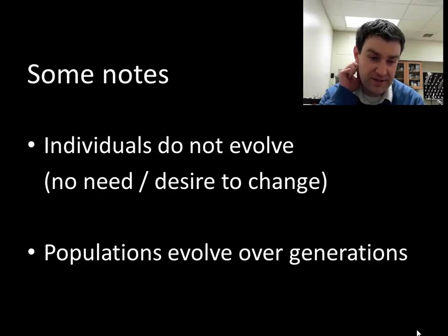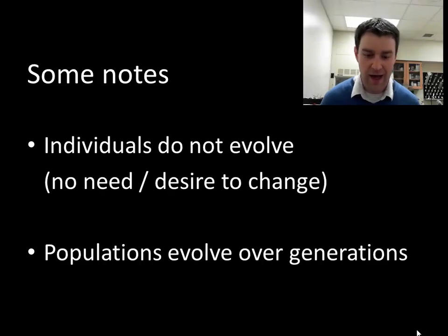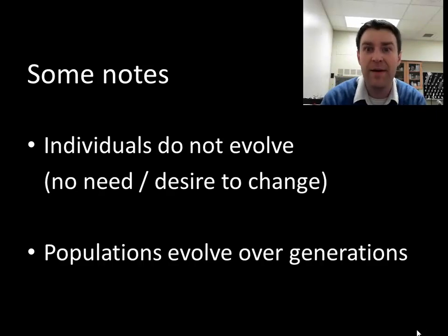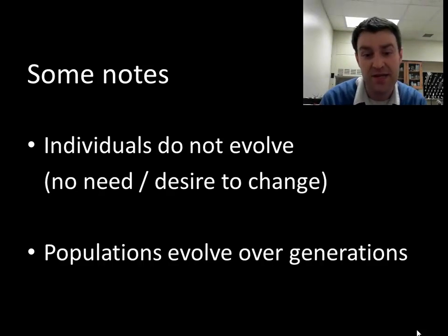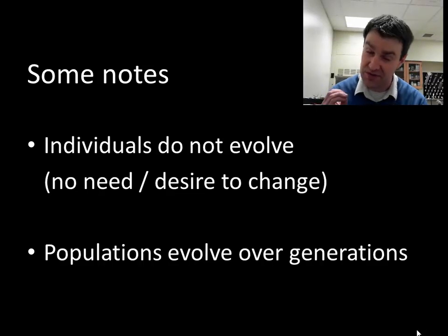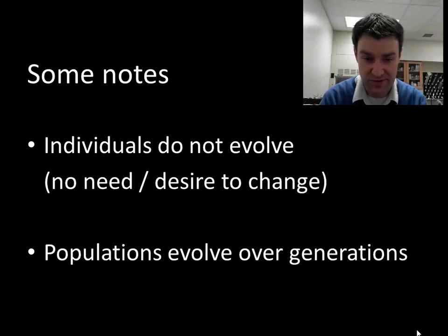Just some notes to make sure you're following. Individuals do not evolve. In that example, there was not any big fish that looked at itself and said it needed to become small. There were just big fish with a big phenotype and small fish with a small phenotype, and some of them out-survived and out-reproduced the others. Individuals do not change. The smallest unit of organization that can change is the population, which started to change over the generations as certain individuals survived and reproduced more.